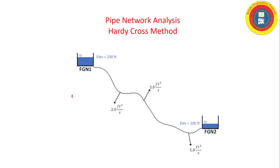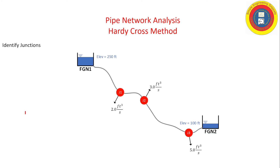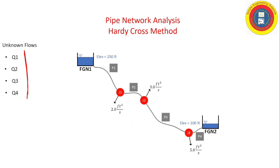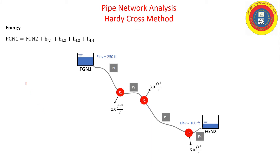Here's our first example network. We have two fixed-grade nodes — one at high energy and one at low energy — and at various locations or nodes we have demands. We are going to be solving the energy and continuity equations for all these pipes and junctions. First, let's identify the junctions. Here we have three, placed at each location where we have a demand. We identify our pipes — one, two, three, four pipes. How many paths do we have? We have one pseudo-loop going from fixed-grade node 1 to fixed-grade node 2, so we're only going to be calculating one flow correction factor. Our unknowns are the four flows.